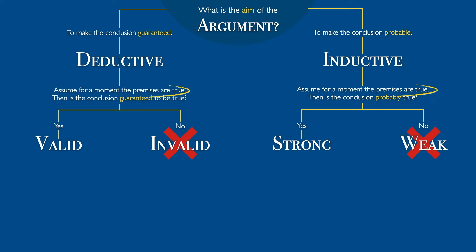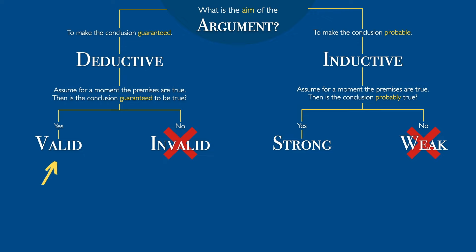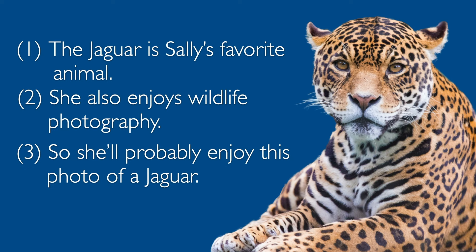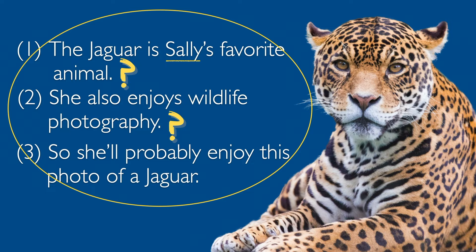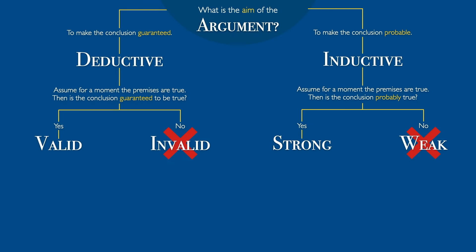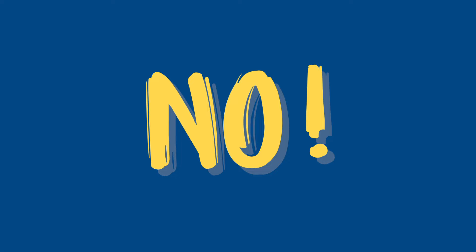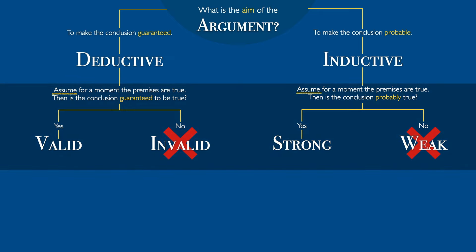So far, we've been assuming the premises are true — and that was fine, because we don't need to know whether the premises are true to evaluate whether an argument is valid or invalid, strong or weak. For example, who is Sally anyway? And is it really true she likes jaguars and wildlife photography? Nobody knows, because I just made all this up. But notice, that didn't stop us from recognizing this as strong reasoning. You might be thinking: I still don't see how we can just assume the premises are true — doesn't truth or falsity matter? The answer is no, at least not here in this section of the flowchart. We're trying to determine whether the reasoning is any good — valid or invalid, strong or weak — and for that, we don't need to know whether the premises are actually true.